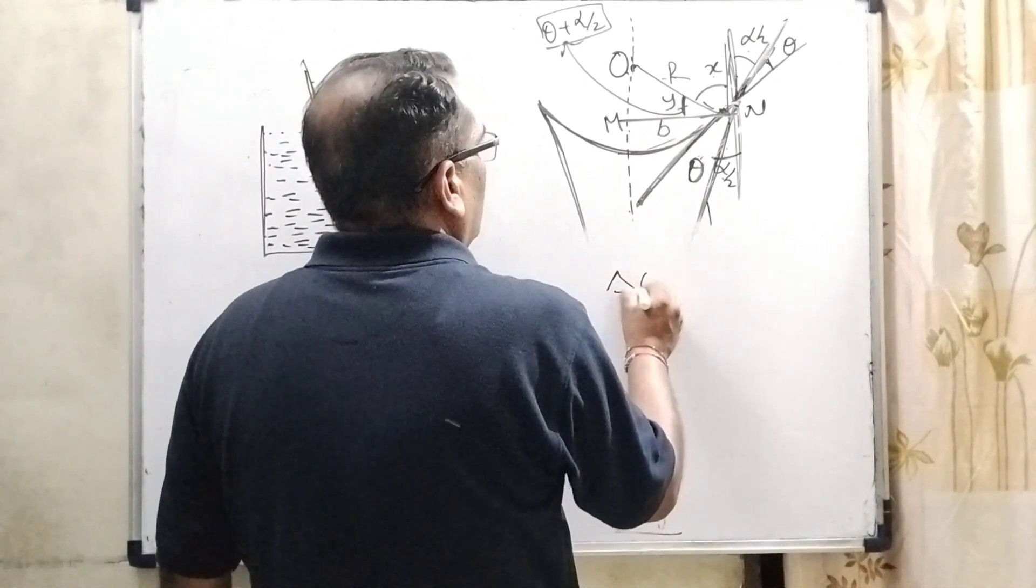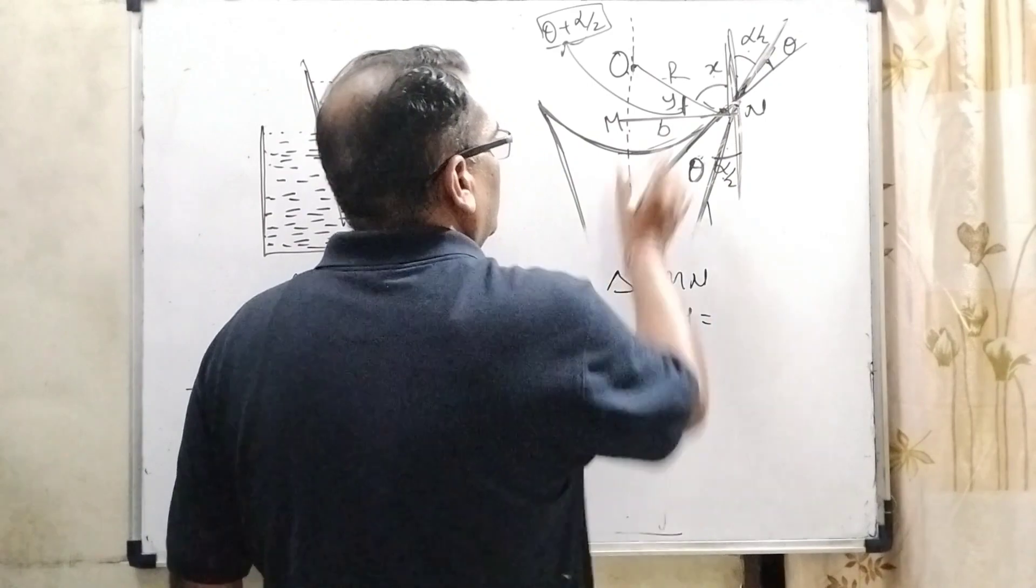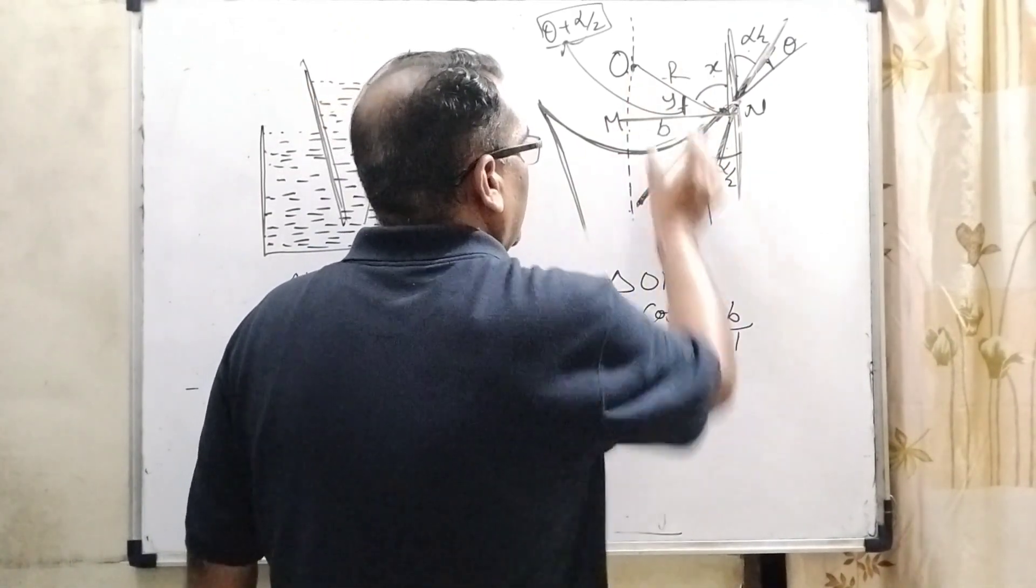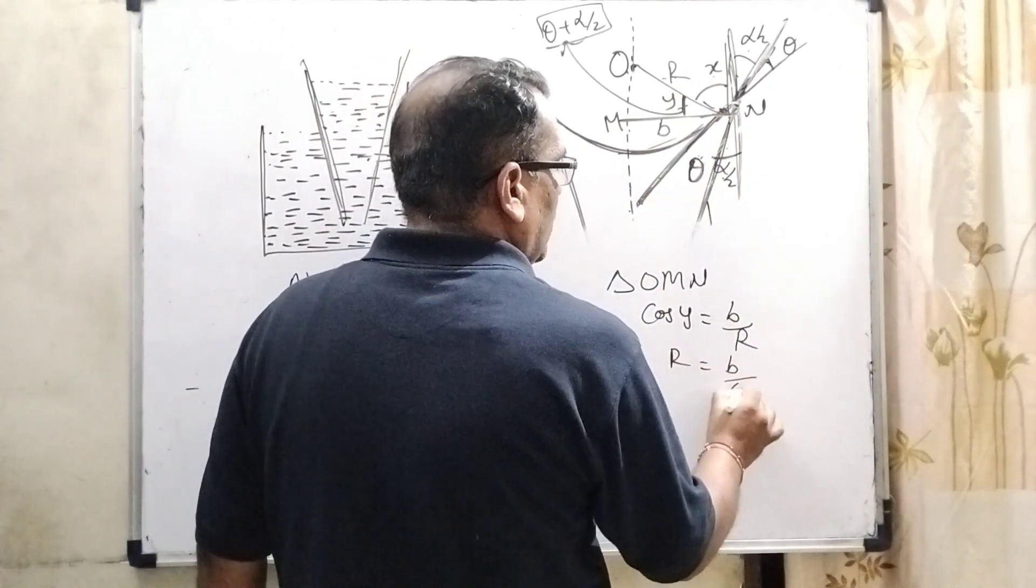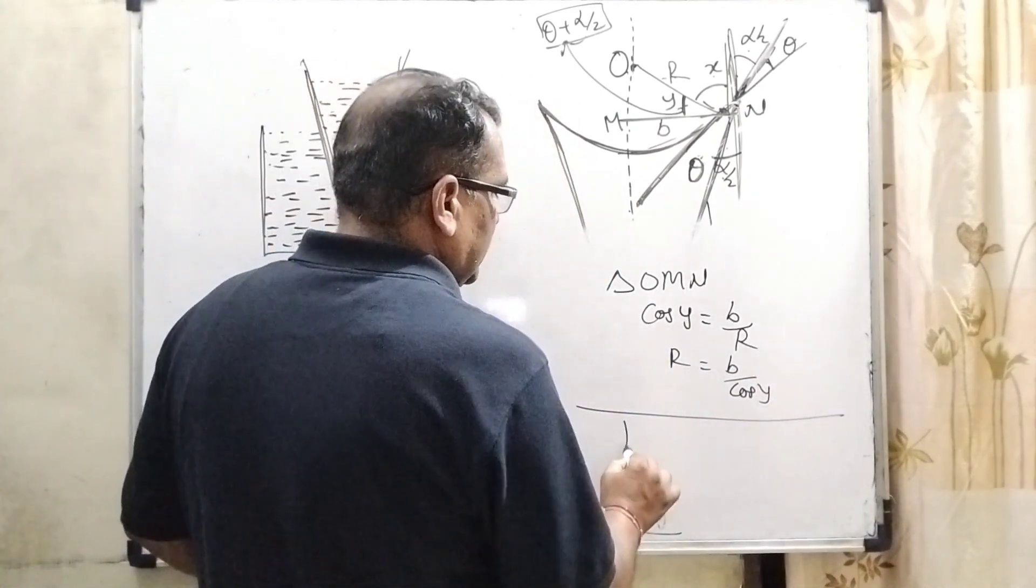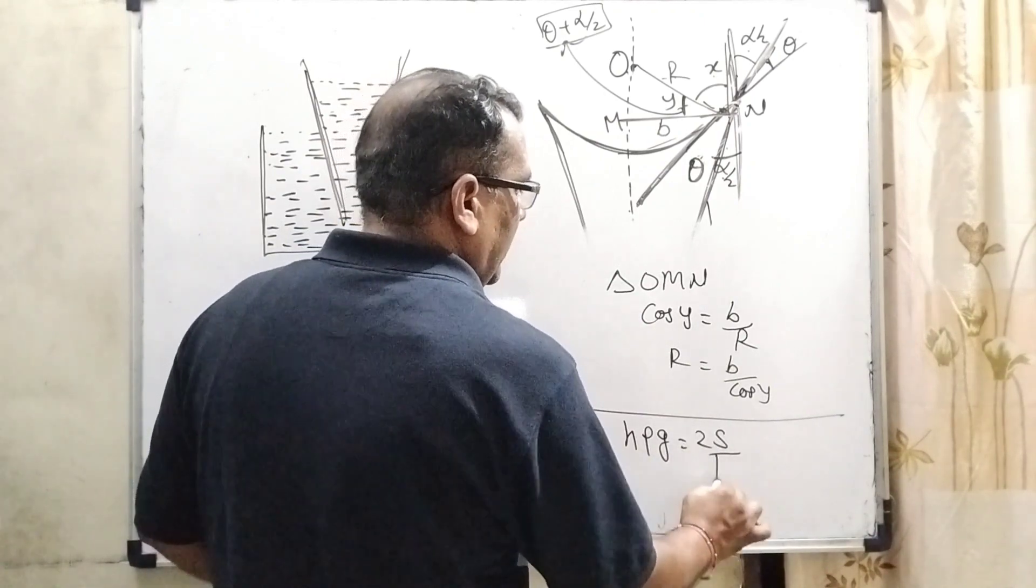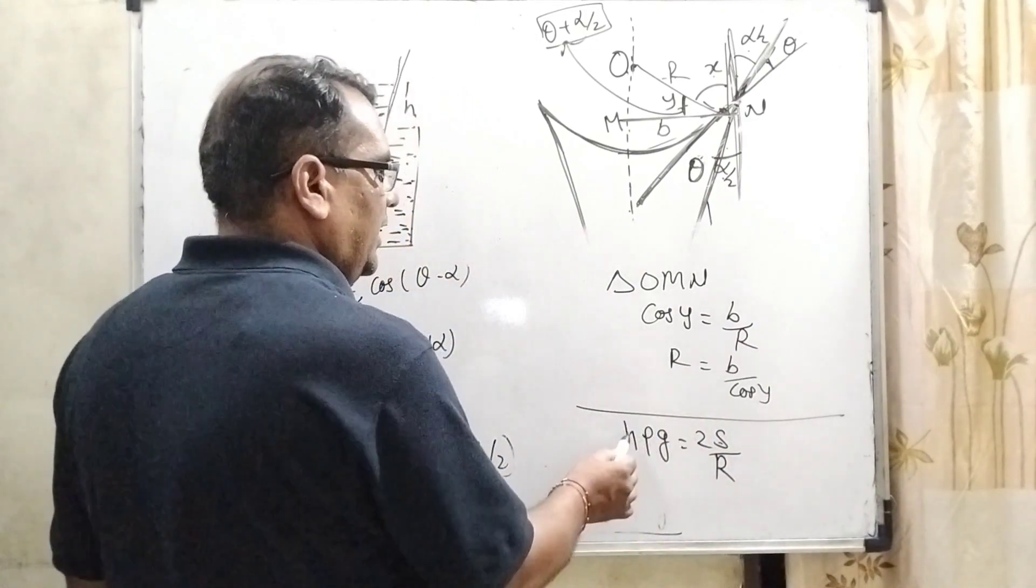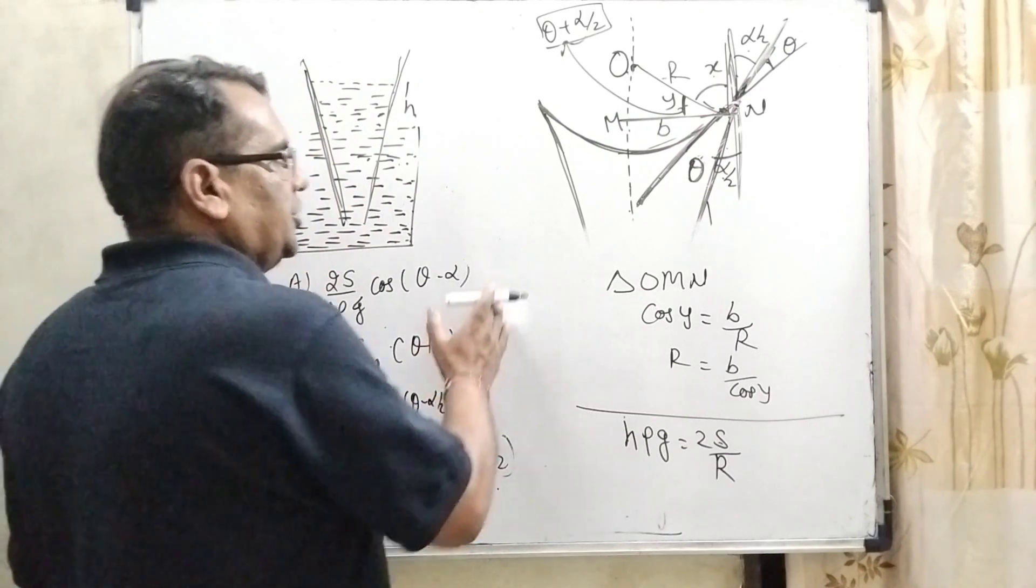Now, in triangle O, M, N, cos Y equal to base. Here, base is B and radius is hypotenuse, is R. Then R can be written as B by cos Y. As you know that here, the excess pressure h rho G is equal to 2S by R. Okay. Here, S means surface tension. Here, R is the radius. H means height. Rho density and G acceleration due to gravity.